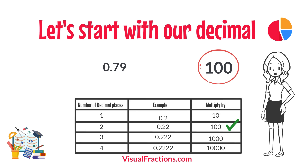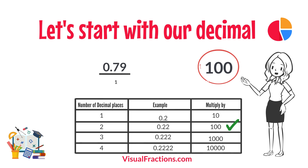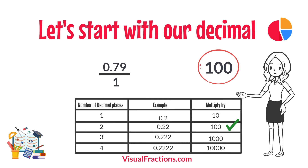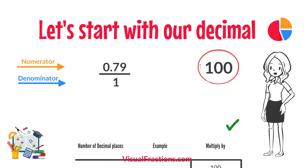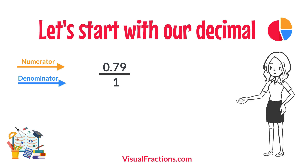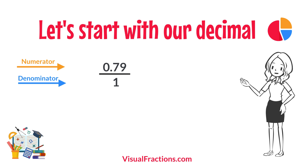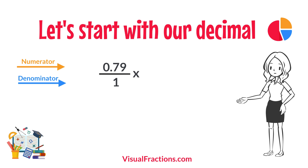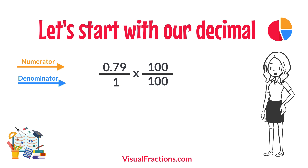To convert this decimal into a fraction, you initially put it over one, essentially treating the decimal as the numerator in a fraction where the denominator is one. This sets up the conversion process where we multiply both the numerator — the decimal — and the denominator, one, by 100 because there are two decimal places.